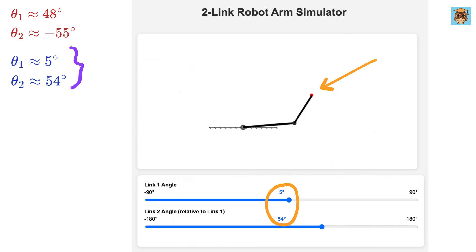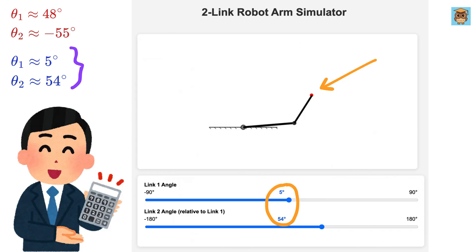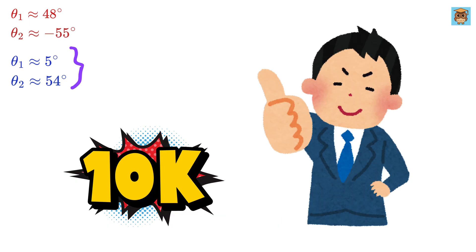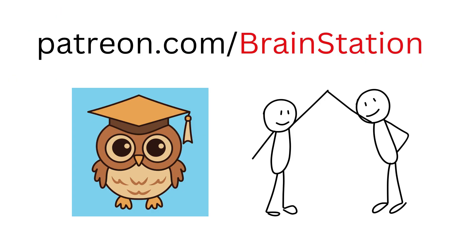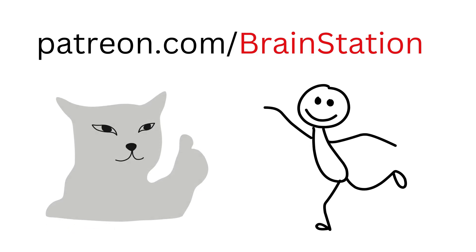This shows how using inverse kinematics, we can mathematically calculate all possible joint angles needed to reach a given position, instead of guessing or manually adjusting. Now, only if this video gets 10,000 likes, I'll go ahead and make the next one. Also, you can support my channel by joining our community and becoming a member.